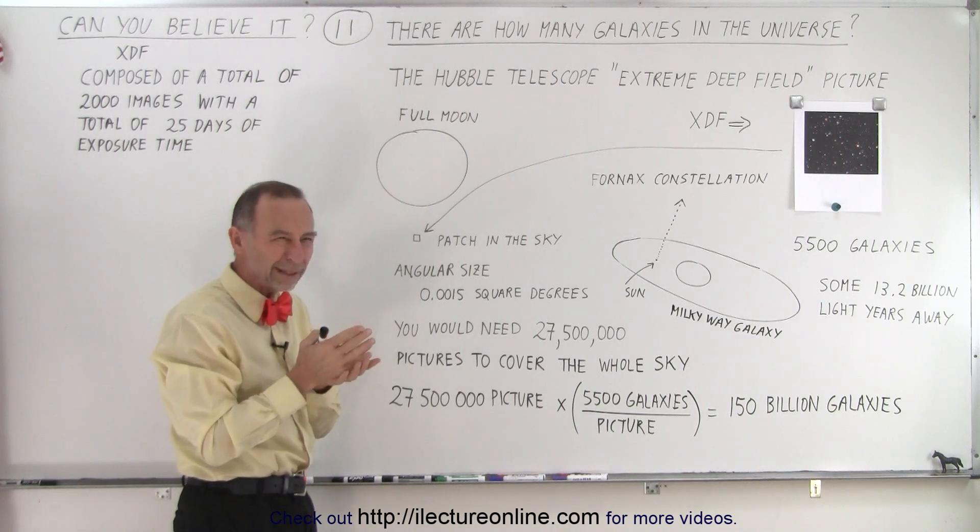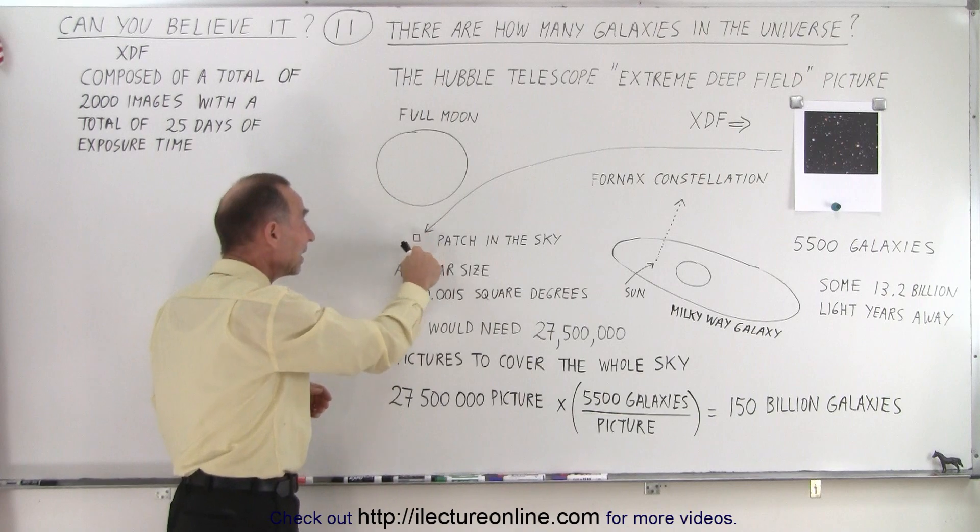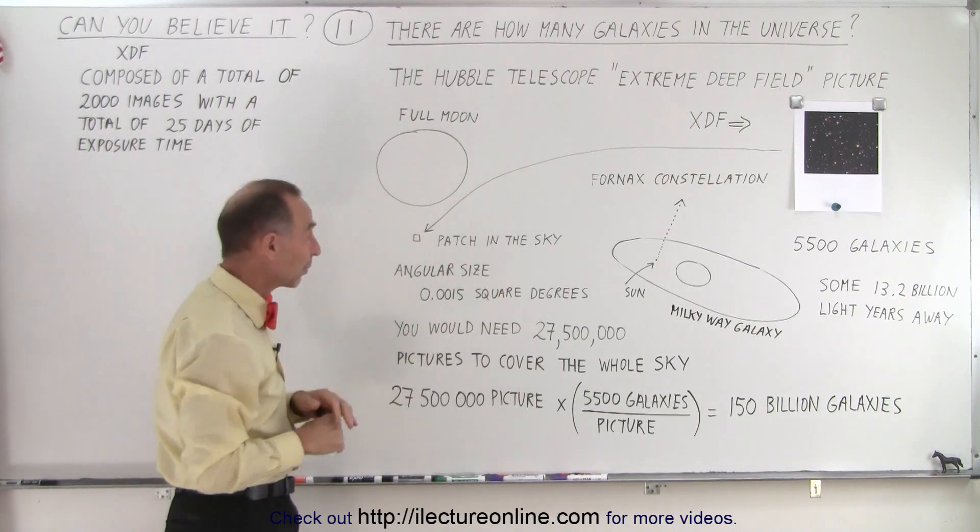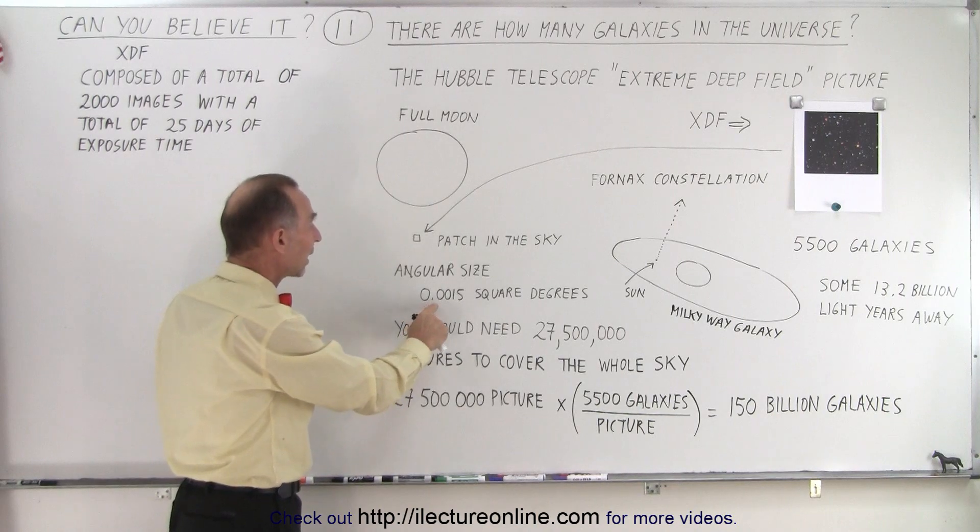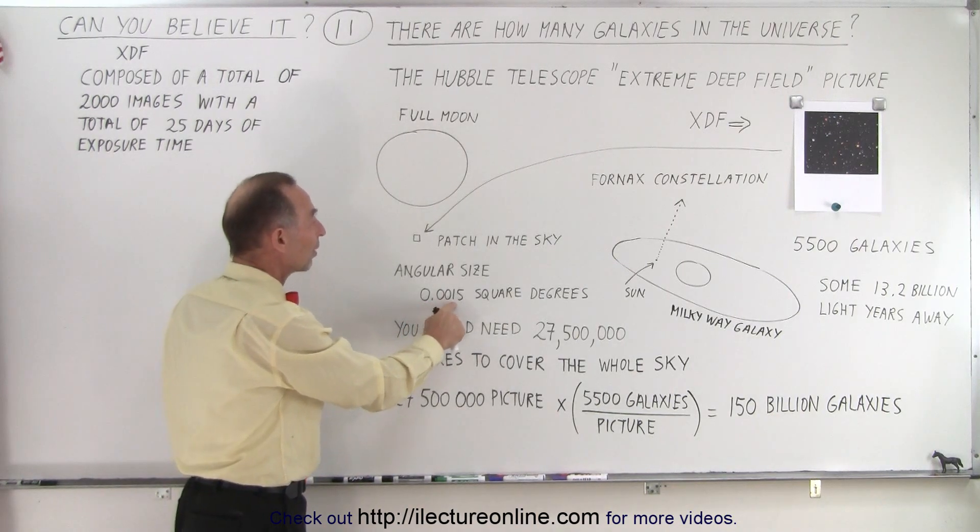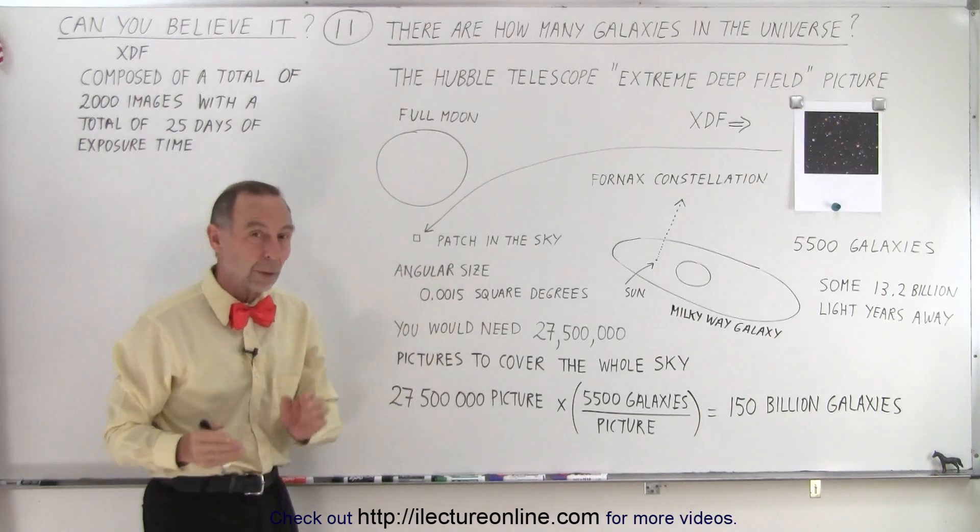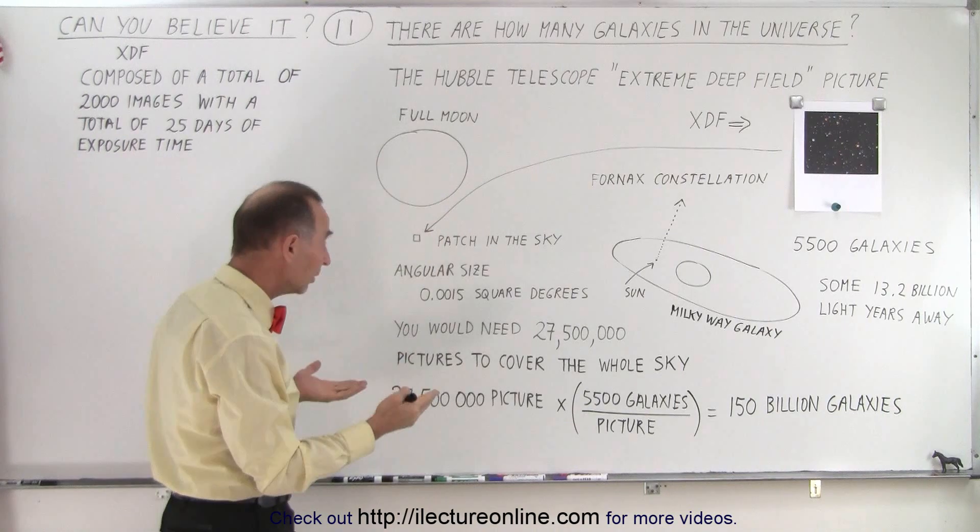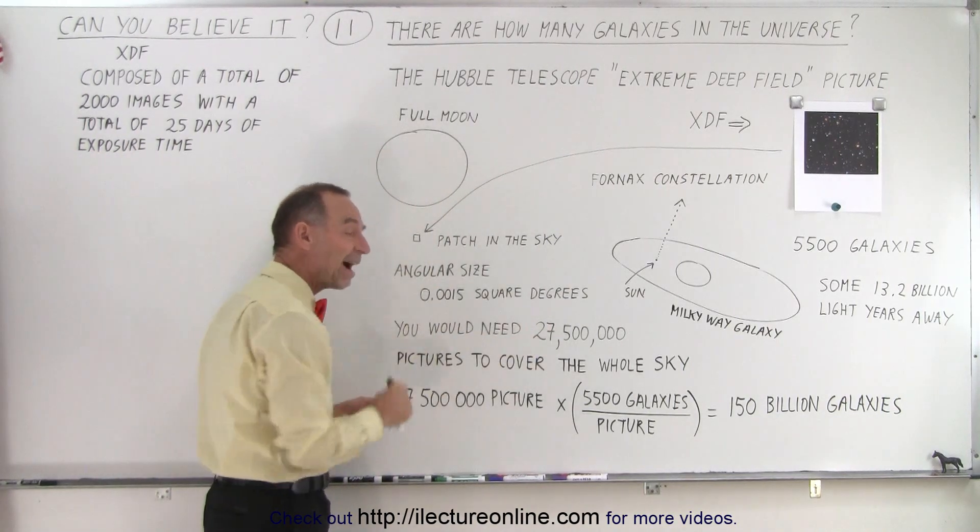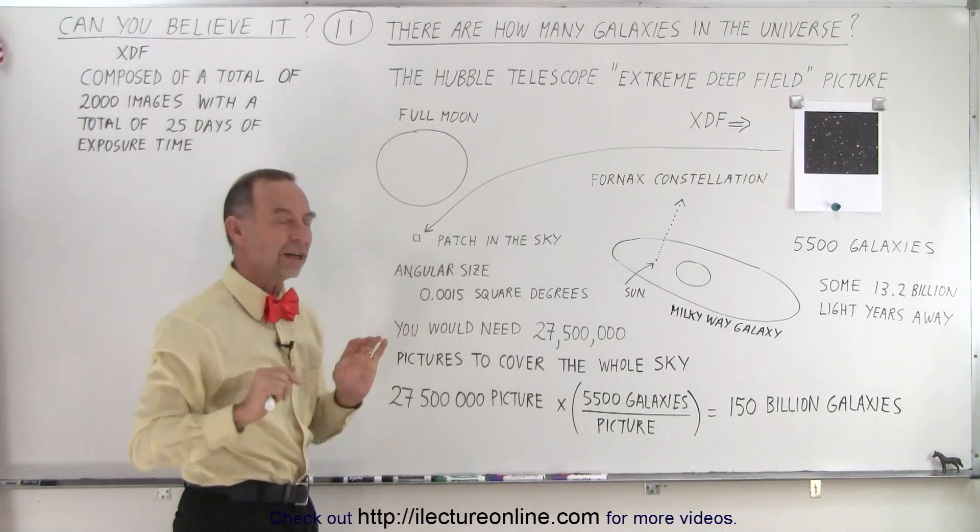About 2.4, actually a little bit less than 2.4 arc minutes in side. The length of each side was less than 2.4 arc minutes, which means that we had 0.0015 square degrees coverage in that little patch. Now, when we look at the entire sky, the entire sky, well, you would need about 27.5 million patches like that to cover the entire sky.